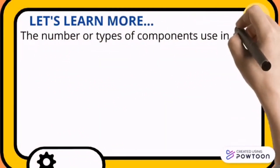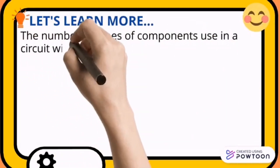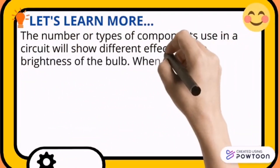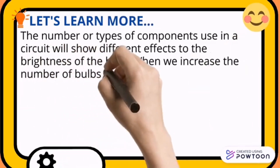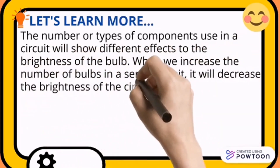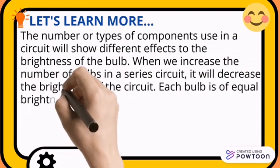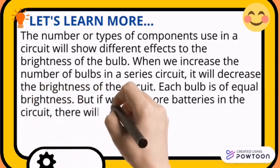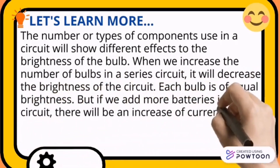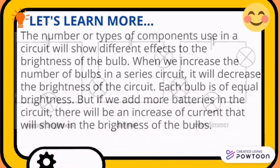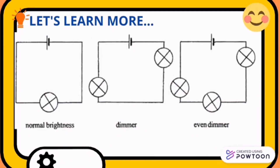The number or types of components used in a circuit will show different effects on the brightness of the bulb. When we increase the number of bulbs in a series circuit, it will decrease the brightness of the circuit. Each bulb is of equal brightness. But if we add more batteries in the circuit, there will be an increase of current that will show in the brightness of the bulb.